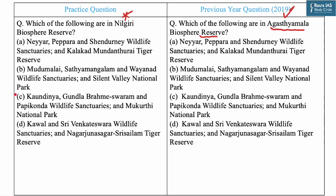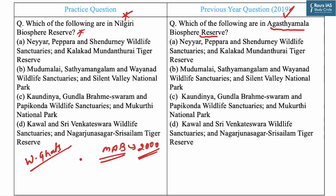The Nilgiri Biosphere Reserve is one of the biosphere reserves under the UNESCO Man and Biosphere Programme, included in 2000. It is located in the Nilgiri mountains of the Western Ghats in southern India and is the largest protected forest area in India, spanning Tamil Nadu, Kerala, and Karnataka. It includes Mudumalai, Mukurti National Park, Sathyamangalam Wildlife Sanctuary (Tamil Nadu), Nagarhole and Bandipur (Karnataka), and Silent Valley, Aralam, Wayanad, and Karimpuzha Wildlife Sanctuaries (Kerala). Answer: B.